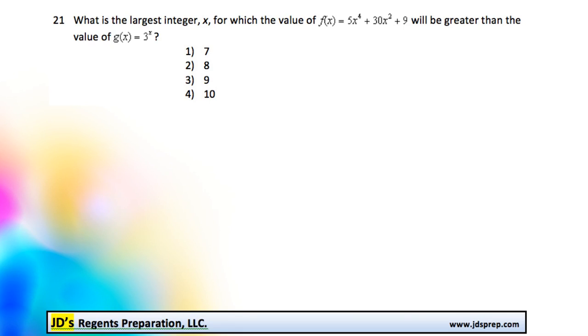Welcome to problem number 21 from the June 2016 Algebra Regents exam. In this question, what we're looking for is the largest integer x for which the value of f(x) equals 5x to the power of 4 plus 30x squared plus 9 is going to be greater than the value of g(x) equals 3 to the power of x.